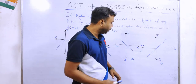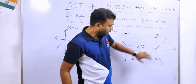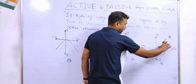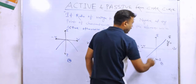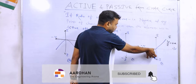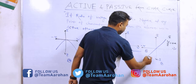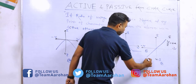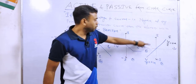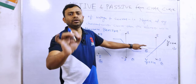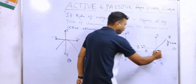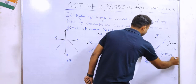पहला curve देखते हैं — यह एक straight line draw हुई है। इसका first half portion आ रहा है first quadrant में। यहाँ पर V और I दोनों positive हैं, तो V by I ratio positive होगा। पूरे characteristic curve में किसी भी point पर V by I ratio negative नहीं मिल रहा है। इसका मतलब यह curve draw हुआ है एक passive nature वाले element के लिए — so this is the curve for a passive element.